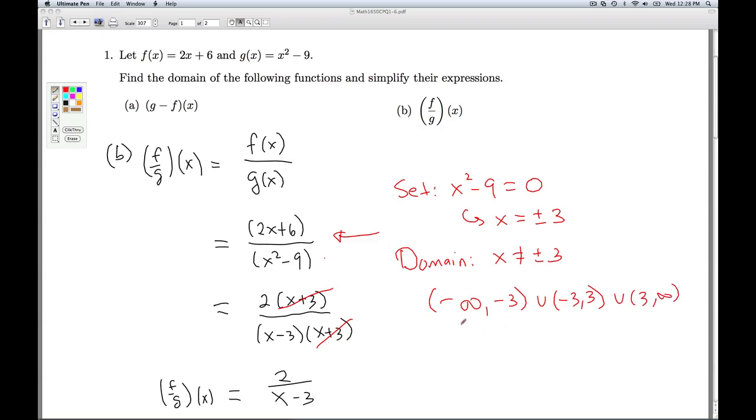Now notice it's important we found the domain before we simplify it. If I had just looked at this formula, then I would easily see that x can't be 3, but what I would be missing is the fact that x can't be negative 3 because that was cancelled out. We'll have more to say about this kind of cancelling and the effects on domain and graph in chapter 4. That'll do it for number 1.